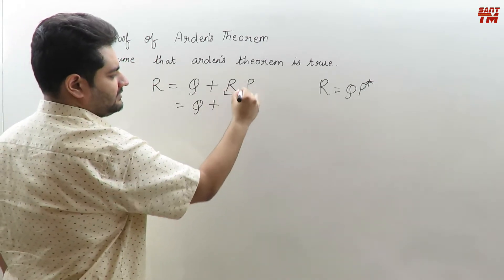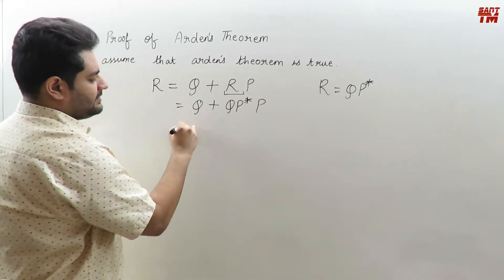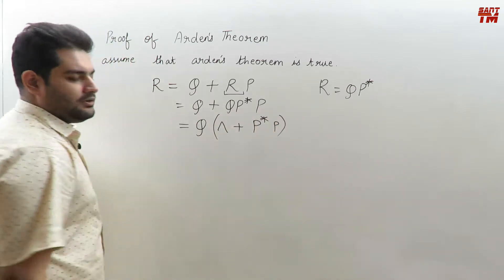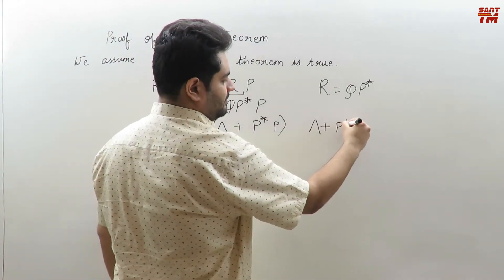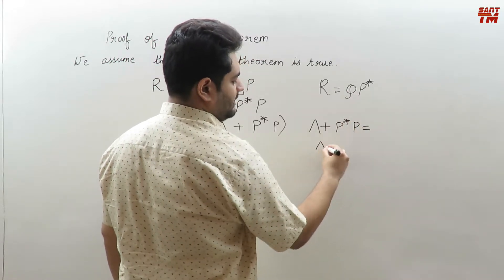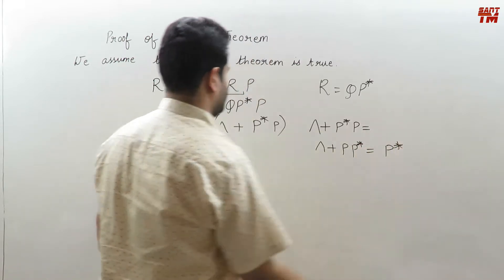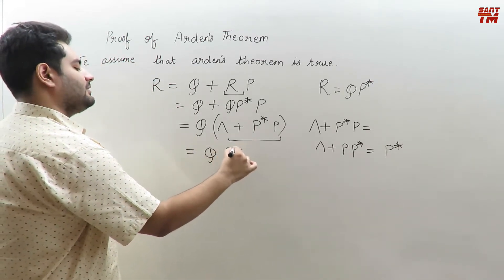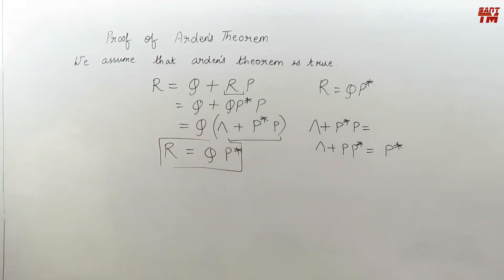Since we have assumed Arden's theorem is true, in the place of R I substitute QP-closure: Q plus QP-closure times P. Taking Q common, we get null plus P-closure times P remaining. From the identity of regular expressions, null plus P-closure·P equals null plus P·P-closure, which equals P-closure. So the whole expression becomes QP-closure, confirming R equals QP-closure.